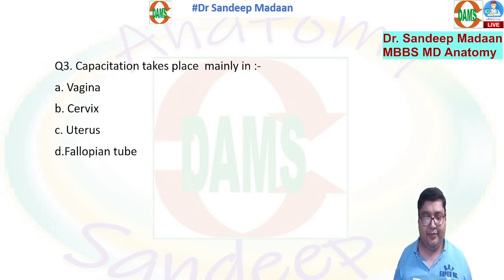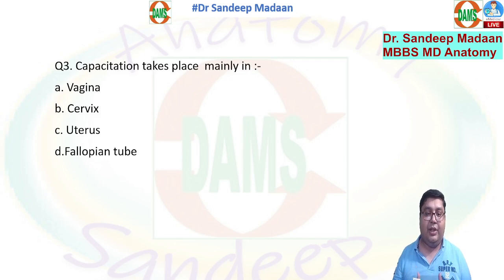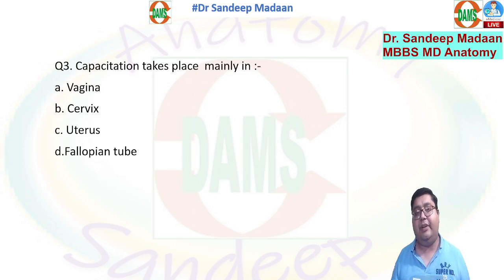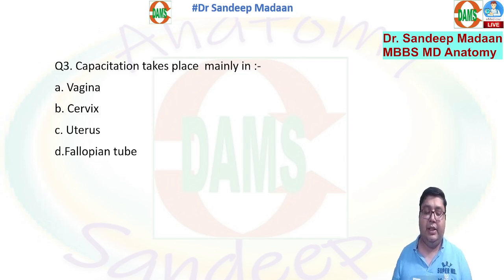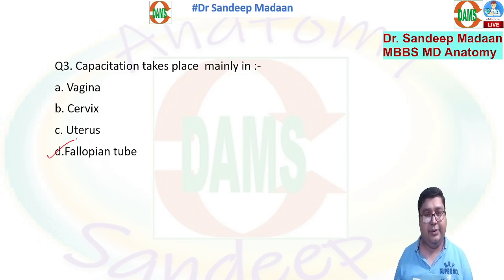The next question is about capacitation. Capacitation is the final step of maturity which gives the spermatozoa the capacity to fertilize, and it takes around 6 to 8 hours. Even though all parts of the female genital tract are involved, the fallopian tube contributes the most. So D is the correct answer — the average time taken is seven hours.